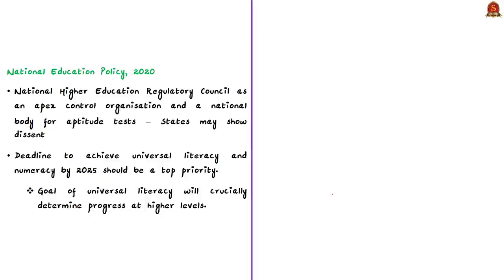The policy sets a single regulatory body with four verticals for standard-setting, funding, accreditation, and regulation — with oversight that is 'light but tight.' A separate vertical called the National Higher Education Regulatory Council will act as an apex control organization. A single regulatory framework for entire India is bound to be resisted by states. Similarly, a national body for aptitude tests must also convince states of its merits. Education, including technical and medical education and universities subject to certain entries in List 1 — the Union List — comes under the Concurrent List, so the center needs to bring states into confidence.